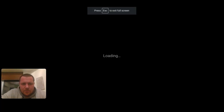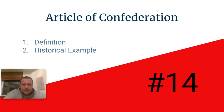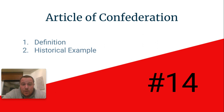EOC review term number 14: Articles of Confederation. After the United States declared its independence from England, we had to come up with a form of government. Not surprisingly, we wanted to come up with a form of government that was as different from the British monarchy as possible.